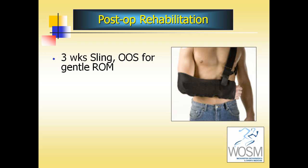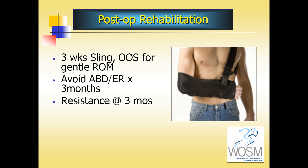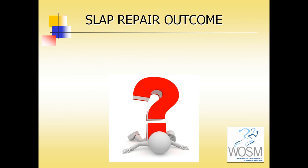Postoperatively, patients are placed in a sling for three weeks. They can come out of the sling daily for gentle motion and daily activities, but they avoid the combined abduction external rotation position for three months. Resistance exercises begin at three months, and throwing begins at the four-month period.